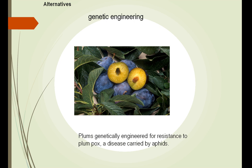Other alternatives include genetic engineering. Plums used to be decimated by the plum pox, a disease carried by aphids. We've changed that genetically, and now they are resistant to these aphids. We almost lost tomatoes entirely because it became too expensive to handpick them. Genetic engineering developed a coating where the skin was more resistant to touch, so now we can use a machine to pick tomatoes at a cheaper price.